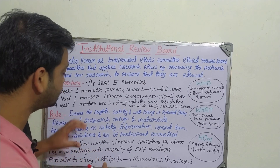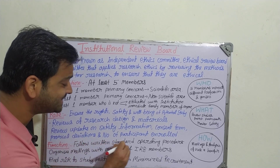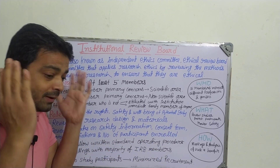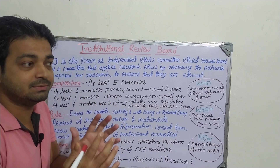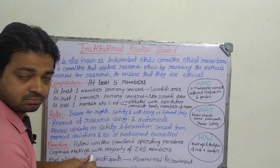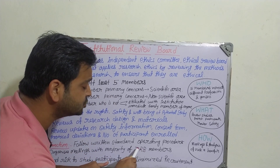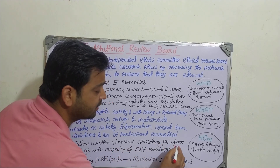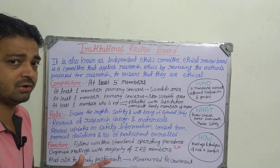Regarding functions — how the board carries out its roles — they follow written standard operating procedures (SOPs). They do not apply arbitrary judgments but work within the defined written protocol. They organize meetings where the majority of IRB members must be present; only two members cannot organize a meeting. The meeting requires the majority, ideally all five, with four acceptable for valid reasons.